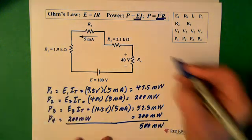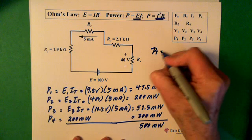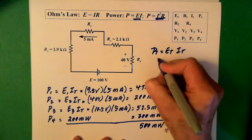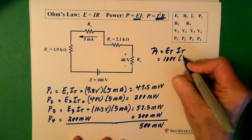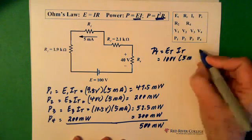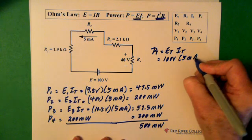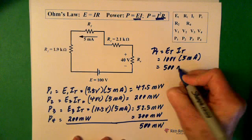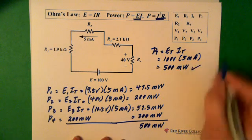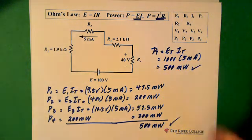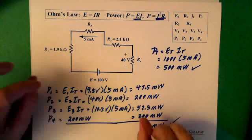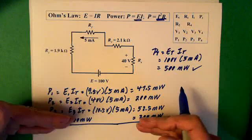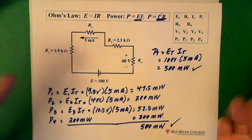500 milliwatts. Now it's a good idea to do a check. So power total is E total times I total, 100 volts times 5 milliamps. And we end up with 500 milliwatts. So here we are, we're all good. So this tells you that your circuit is okay. You've done everything right. All of these things add up. And so we know we're good.